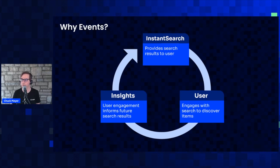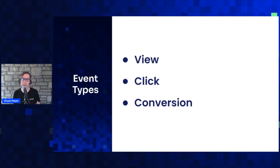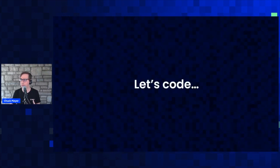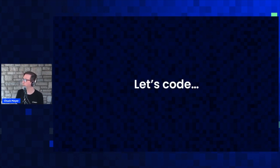Our Insights API is able to collect three classes of user events: when they're viewing search results, which results they click on, and which results convert further down the line — whether they're in a shopping cart, a streaming site, or something of that nature. Rather than just defining them loosely, I think it might be better to show a practical application, so we're going to dive right into coding.